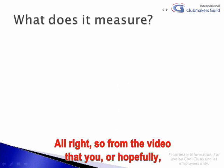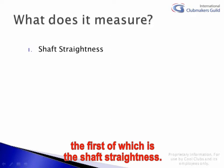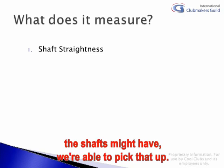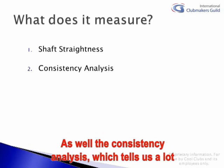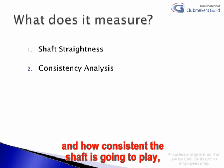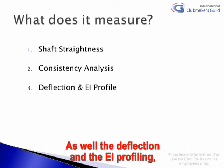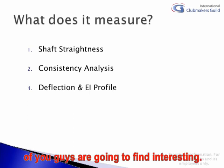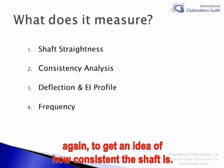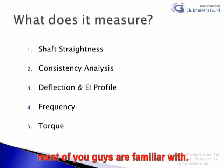From the video most of you hopefully watched, you can see that it tests five things. The first is shaft straightness — not only the deflection at the tip of the shaft, but any bowing, bending, or S-shaped curves the shafts might have. As well as consistency analysis, which tells us a lot about the quality of manufacturing and how consistently the shaft is going to play depending on which way it's installed in the head. As well as deflection and EI profiling. We also do frequency testing on multiple planes to get an idea of how consistent the shaft is. And finally, torque, which most of you guys are familiar with.